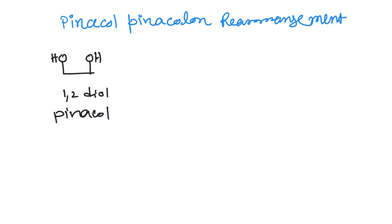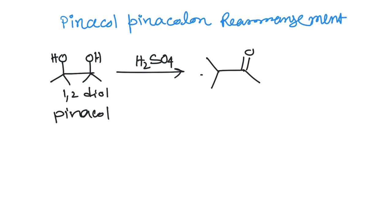When these 1,2-diols are substituted — for example, they have methyl groups or any other groups — and you give acid like dilute H2SO4, you will get a rearranged product, and this is called pinacolon. This reaction is called the pinacol-pinacolon rearrangement. In this video we will look into the mechanism and also discuss some important examples of this reaction.